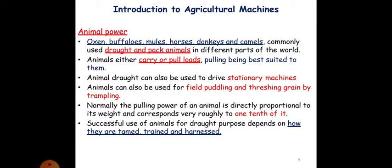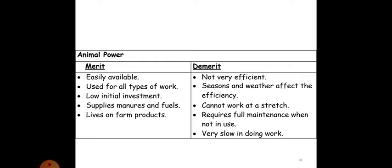Animal power is a very important source of power for agricultural benefits. The merits are: it is easily available, used for all type of works, has low initial investment, supplies manures and fuels, and lives on farm products. But it has certain demerits: it is not very efficient, seasons and weather affect the efficiency, it cannot work at a stretch, requires full maintenance when not in use, and is very slow in doing work.